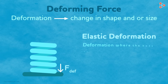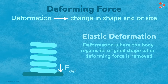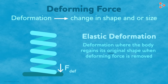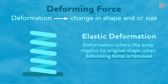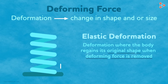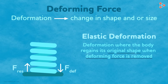Elastic deformation is the case of deformation where the body regains its original shape as soon as the deforming force is removed. But what really happens? In a state of deformation, there is a restoring force generated inside the body resisting the deformation — a restoring force!